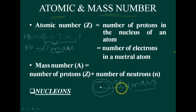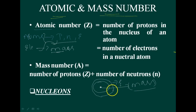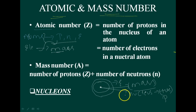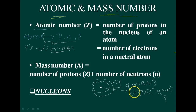The positive charge of the nucleus is due to the protons. Because neutrons are electrically neutral, whatever positive charges the nucleus has come from the protons. The charge on the proton is equal but opposite to that of the electron — the charge on the electron is negative.